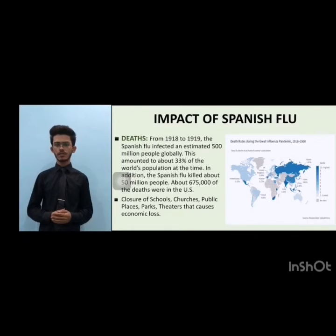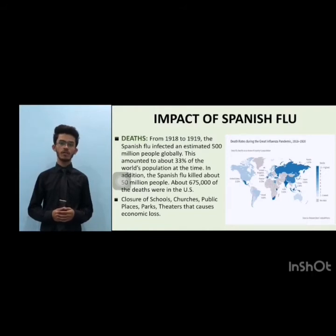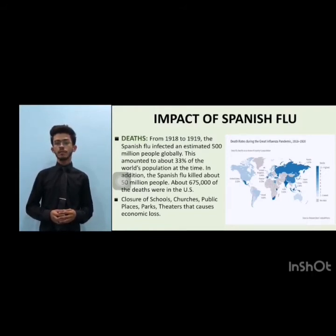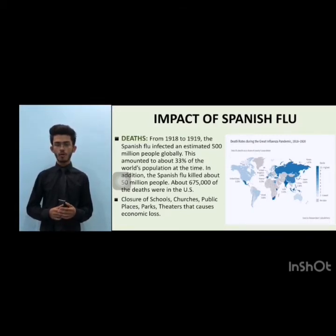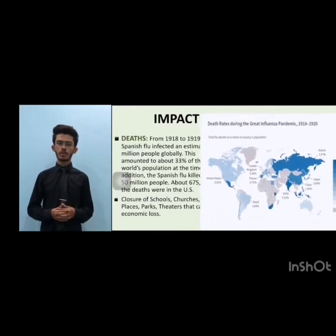As for the impacts of Spanish Influenza, it is estimated that about 500 million people were infected, amounting to about 23% of the world's population at that time. It killed 50 million people globally, of which 675,000 deaths were in the US. Moreover, it resulted in the closure of parks, colleges, schools, churches, public places, and theatres, which caused significant economic loss.